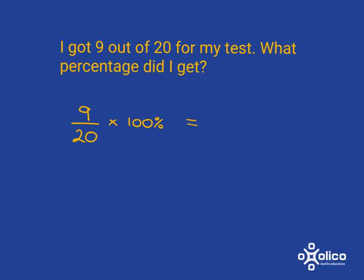So you get 9 times 100 over 20. We cancel — the 2 can cancel in here, giving 5 there. So we get the answer of 45 percent.